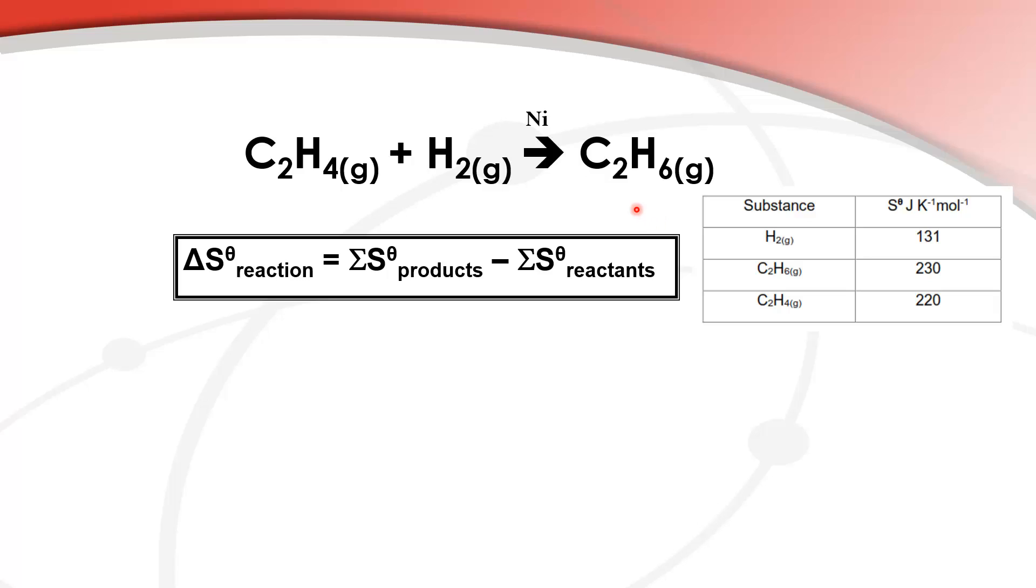Before we do the calculation, let's see if we can predict the change in entropy. On the left side of the arrow we have two moles of gas and on the right side we have one mole of gas. So already we know we're going to have a decrease in entropy.